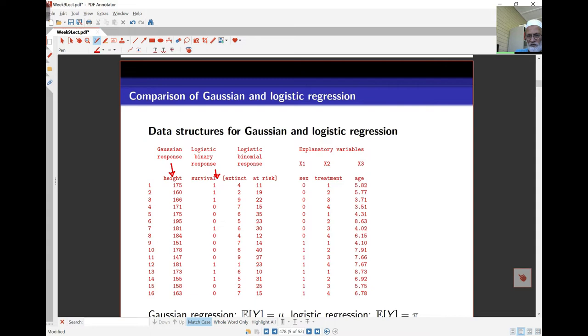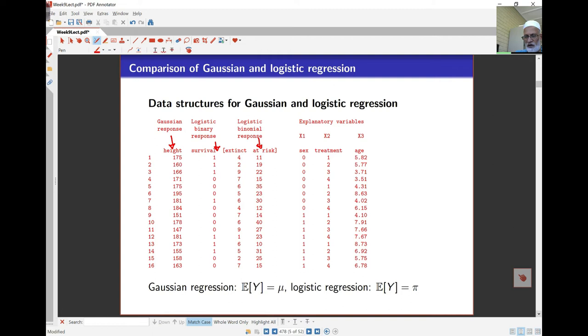Binary response here, in this case of extinct versus not extinct. So the normal distribution will be just the usual continuous data. For the binary, it will be 1, 0. And for the Bernoulli, it's 1, 0. For the Bernoulli, we'll have two parts. One is going to be the failures and one is going to be the success. And then the usual covariates here. And the mean here is going to be mu for the Gaussian regression, and pi for the logistic regression in this case.